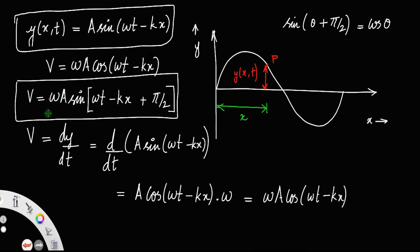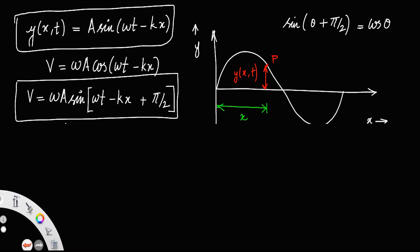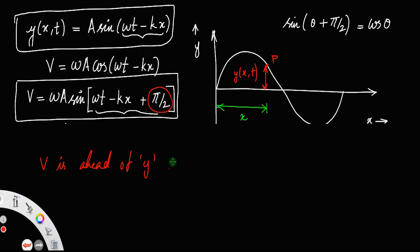If you compare both y and v — displacement and velocity — you will find that for displacement the phase is (ωt − kx), but for velocity it is (ωt − kx + π/2). This means velocity is ahead of displacement y by π/2. So velocity is ahead of displacement by a phase of π/2.